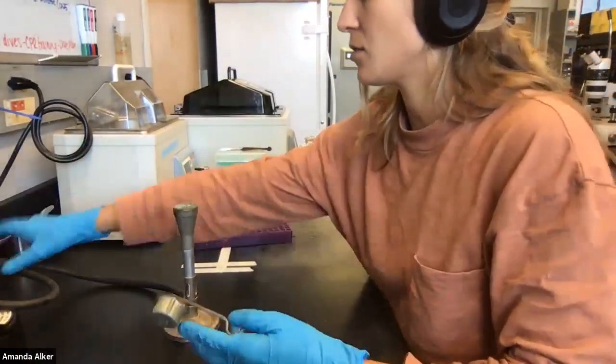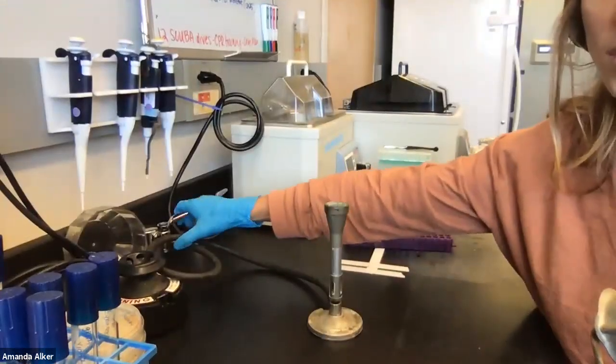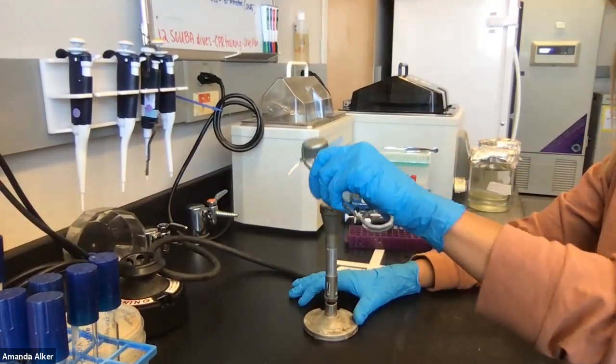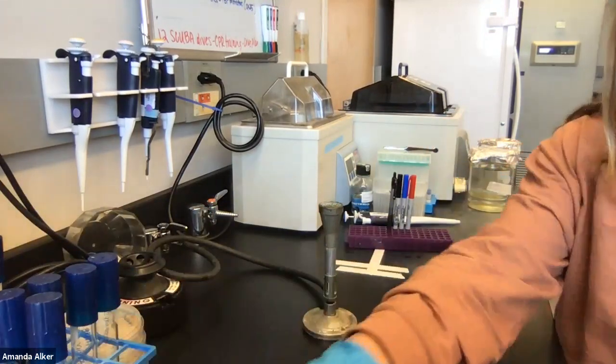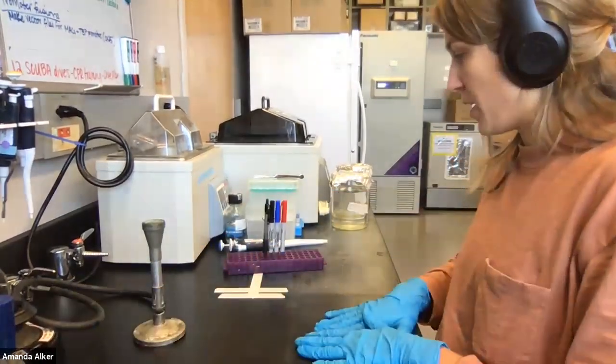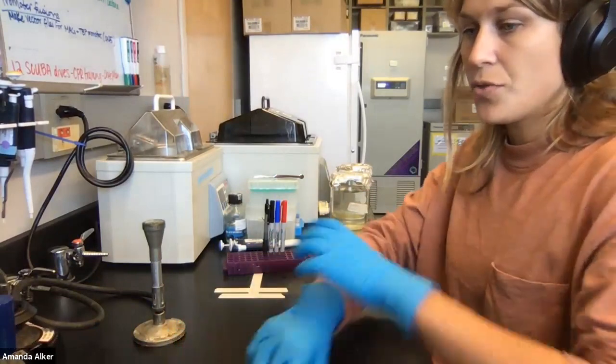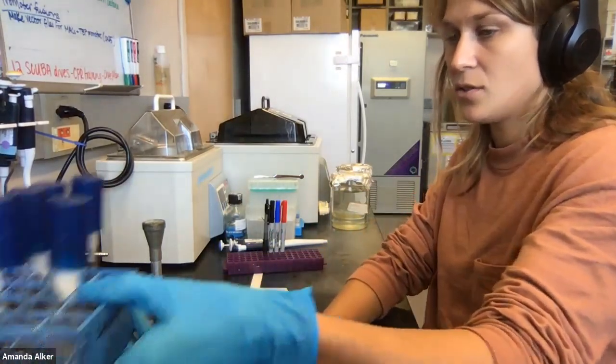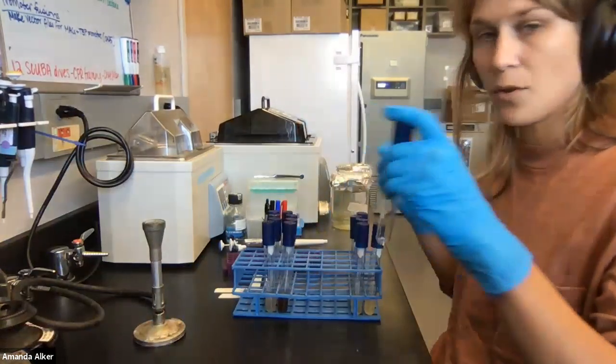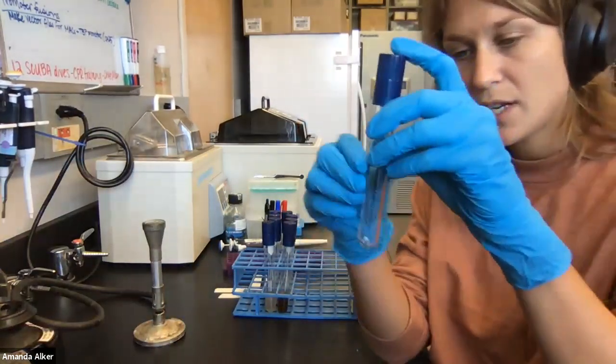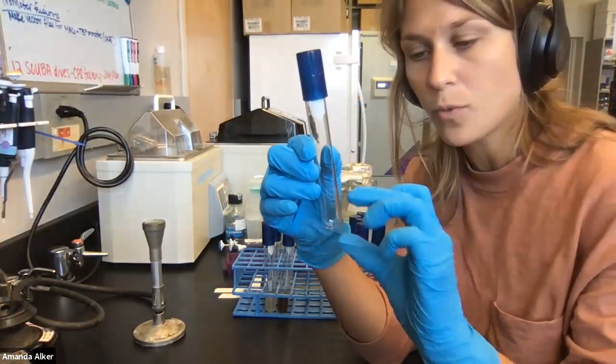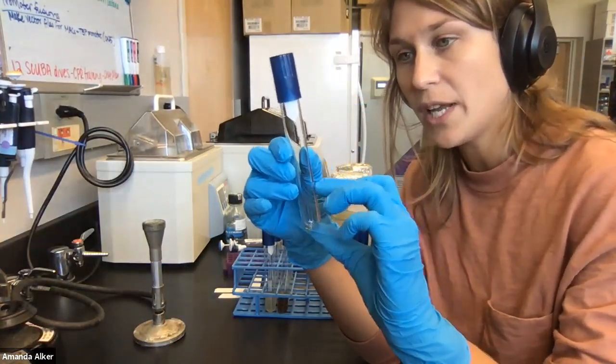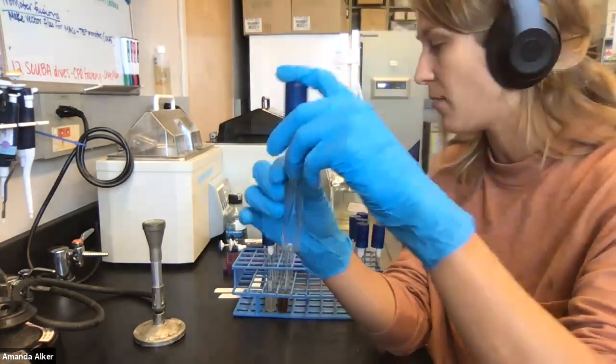All right and now we have to turn on our flame. This is the second part of our sterile technique so we're going to flip on the switch. All right and now we have our flame going and we have our sterile environment around us. Now the way that we inoculate into liquid culture is into culture tubes. You need quite a bit of air or head space from the volume of culture that you put in to the amount of air that you have on the top.